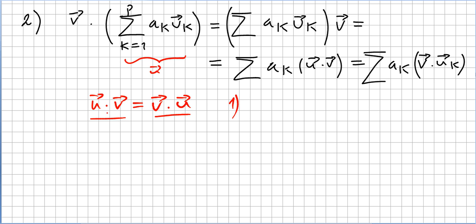Using the commutativity of the dot product — v·u equals u·v — we can write this as the sum of ak·uk times v. By the reasons we saw in proof 1, this is the same as ak times (u·v), and then using commutativity again, we get the sum of ak times (v · uk).